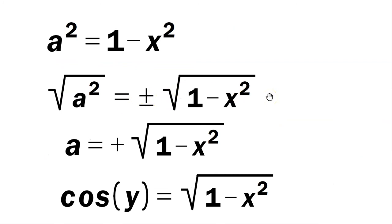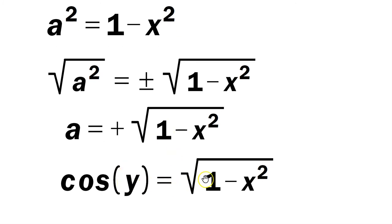But as we've just said, because you are in the quadrants 1 or 4, and because a really just stands for the cosine of y, that means we have to take the positive square root of 1 minus x squared. In other words, we can say cosine of y is the positive square root of 1 minus x squared.